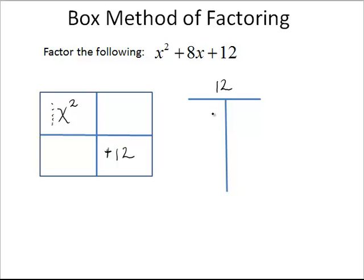Now what we need to do is find the factors of 12 that will add up to equal this middle coefficient, which is a positive 8. So, what are the numbers that multiply to equal 12? We have 1 times 12, we have 2 times 6, and we have 3 times 4. Which is the only possible combination that can give us 8? Well, 2 and 6.